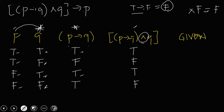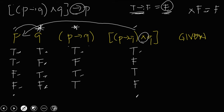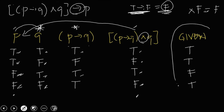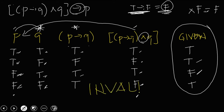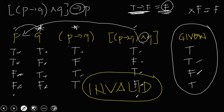For the last column, this column implies P — the connector is implication. Only TF is false. So: true → true = true; false → true = true; true → false = false; false → false = true. This is the last column of the truth table. Since it is a combination of true and false, this is a contingency. Therefore, the given argument is invalid, because only a tautology is a valid argument.